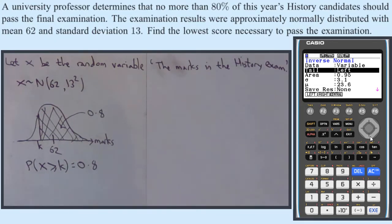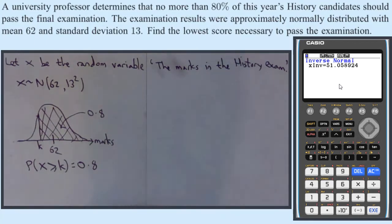Remember there's no distinction between 20 less than or equal to or less than, it doesn't matter for a continuous variable. So I'm going to do it in the way it says, a right tail area is 0.8, the standard deviation is 13 and the mean is 62, click through and that tells me the mark, the passing mark is 51.058, 51.0589.